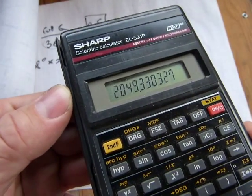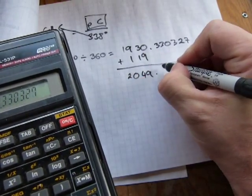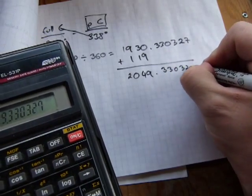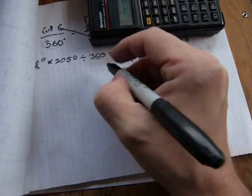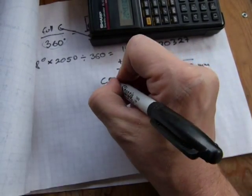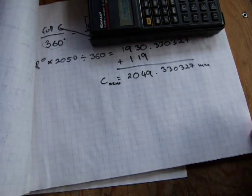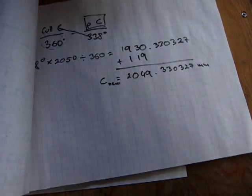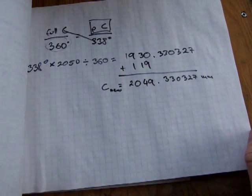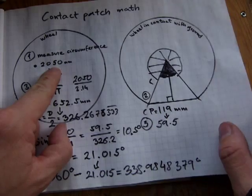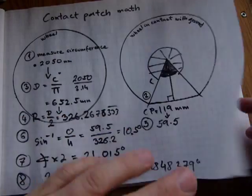The new circumference — with the contact patch touching the ground and the tire inflated to only 52 psi instead of 90 — is 2049.3 millimeters. You can see that the tire is compressed and the effective size of the wheel is getting smaller.